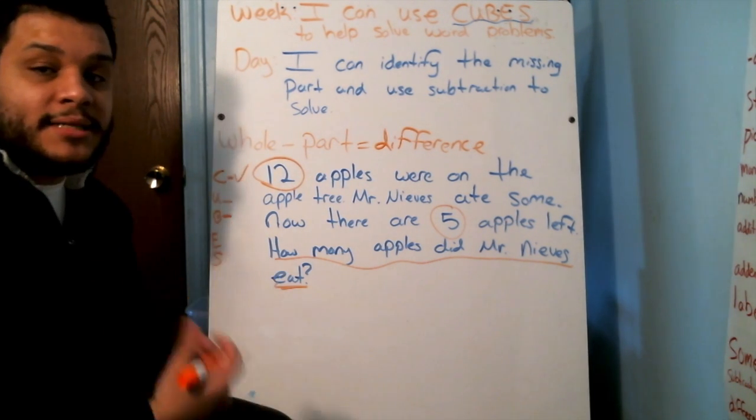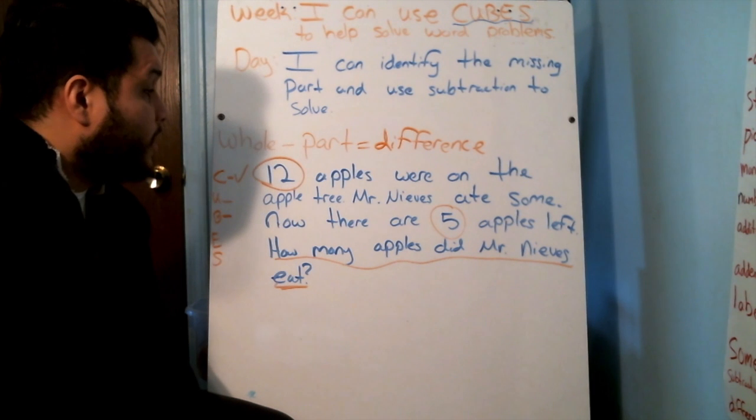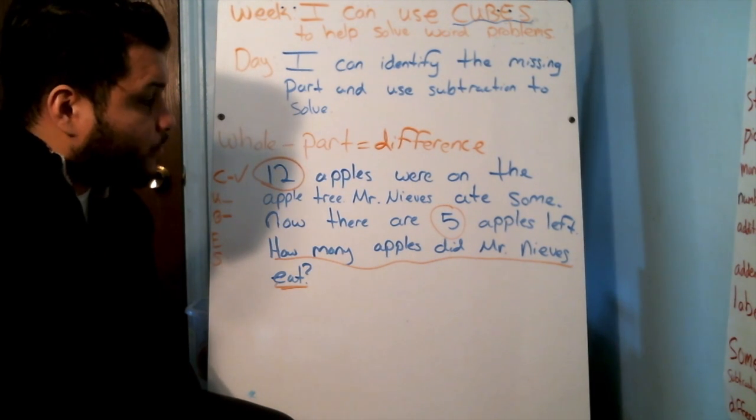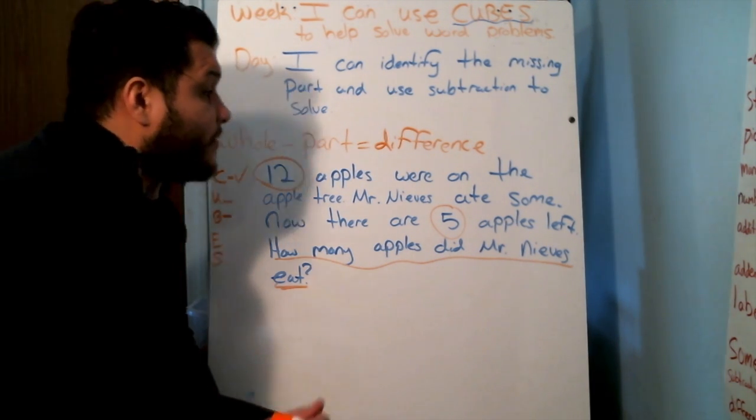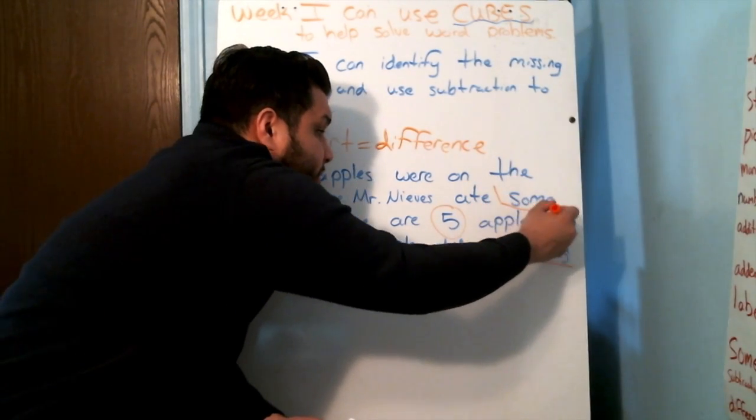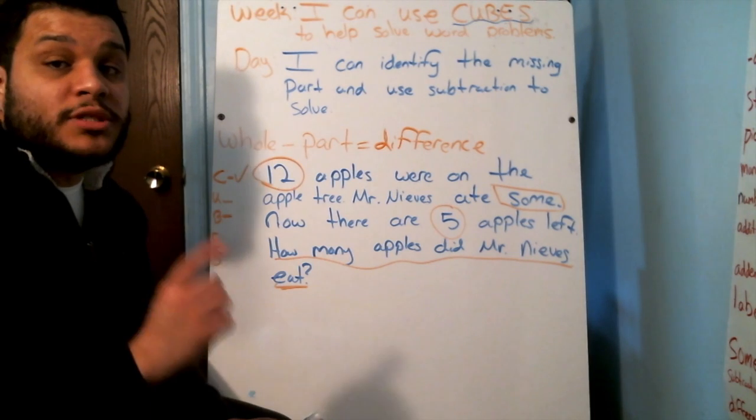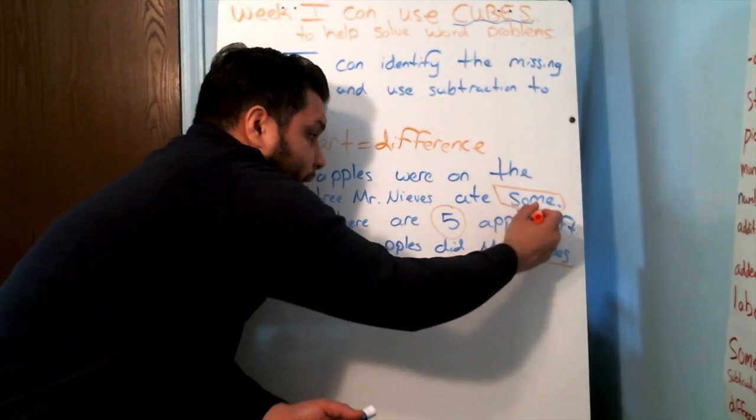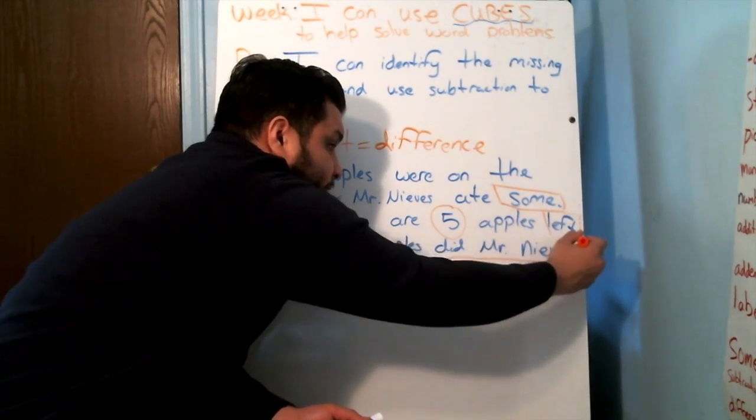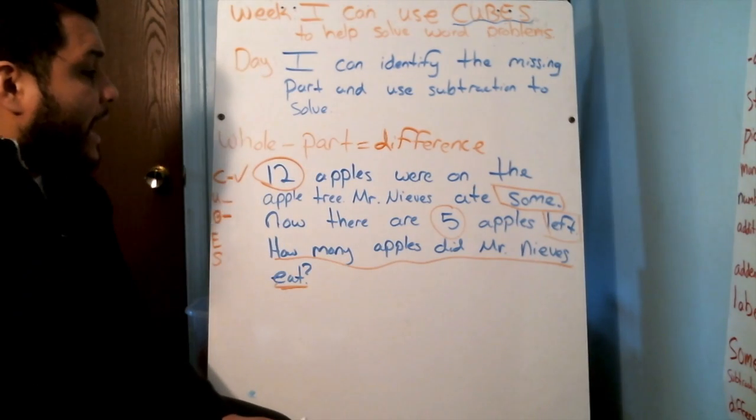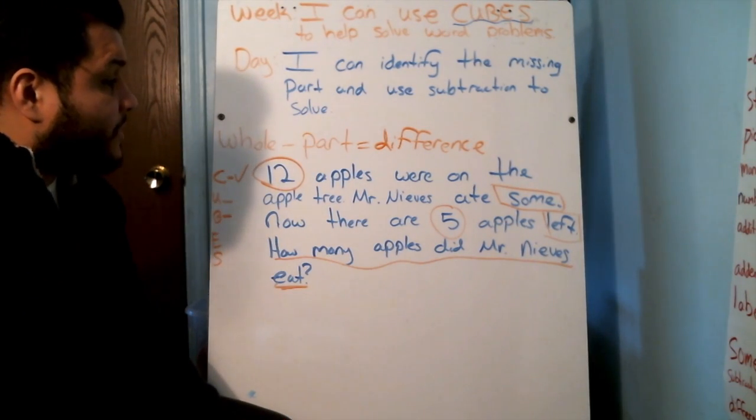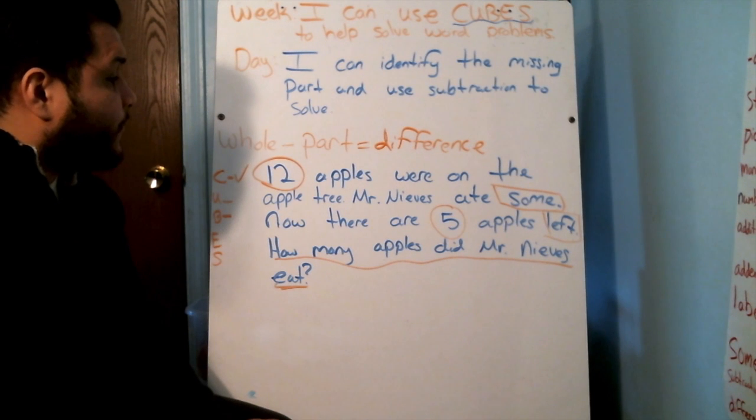B is boxing our math words. 12 apples were on the apple tree. No math words there. Mr. Nieves ate some. Now there are five apples left. Yes, we learned yesterday that left is a math word. How many apples did Mr. Nieves eat? Now let's focus in.